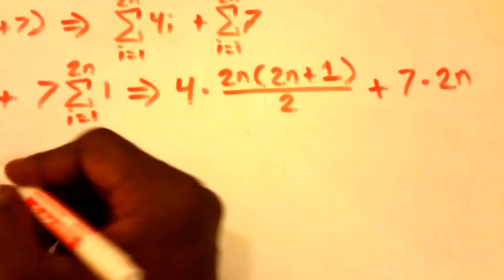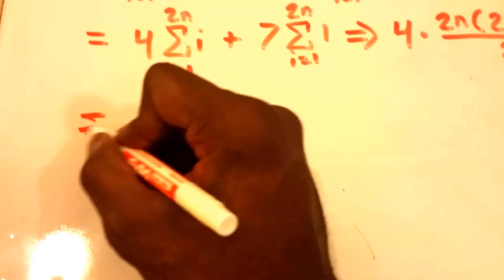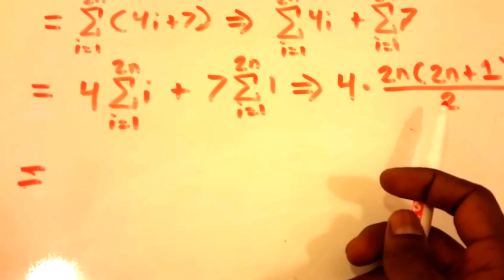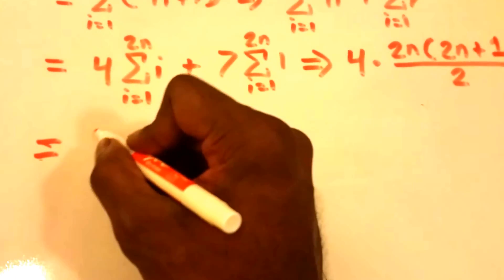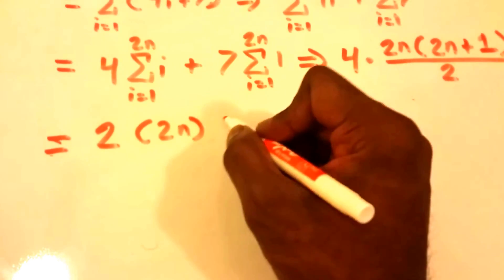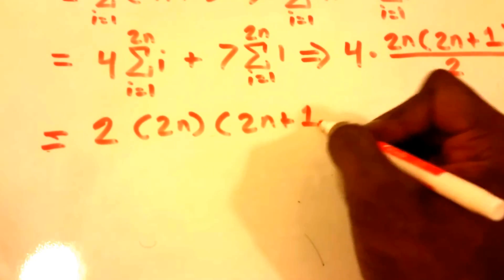Let's try to simplify this equation over here a little bit more. So now this is equal to, well 4 times a half is just 2, so we have 2 times 2n times 2n plus 1.